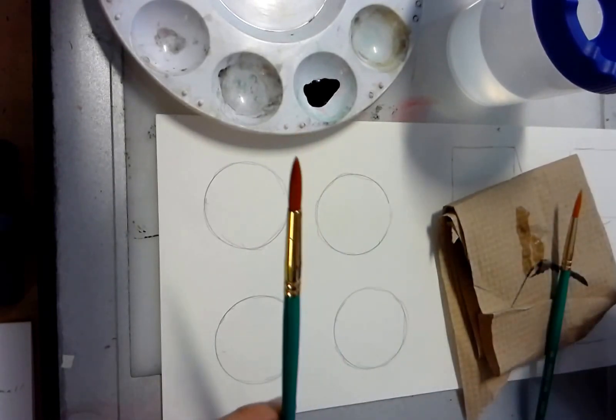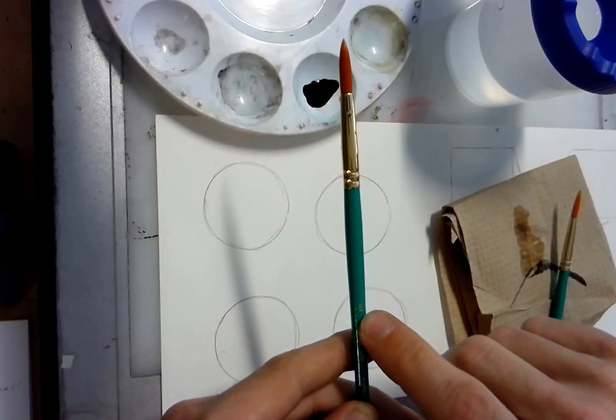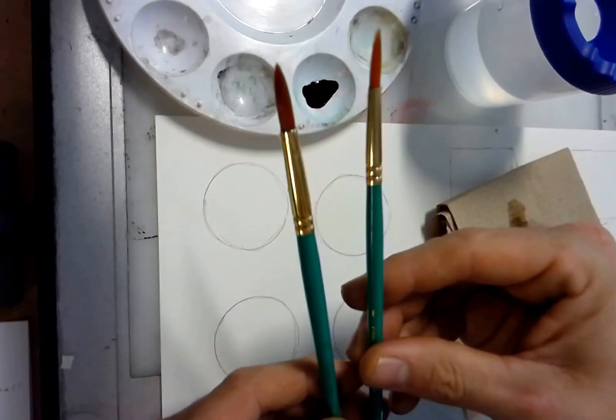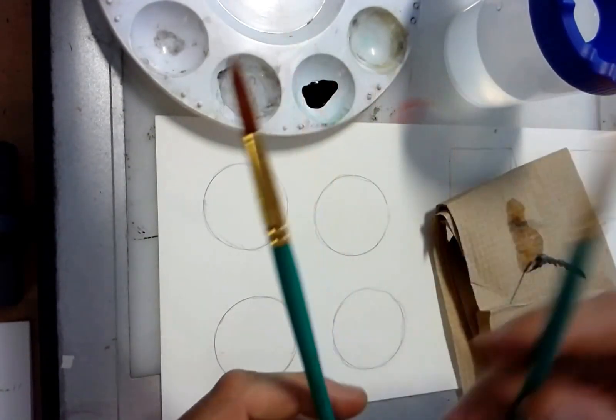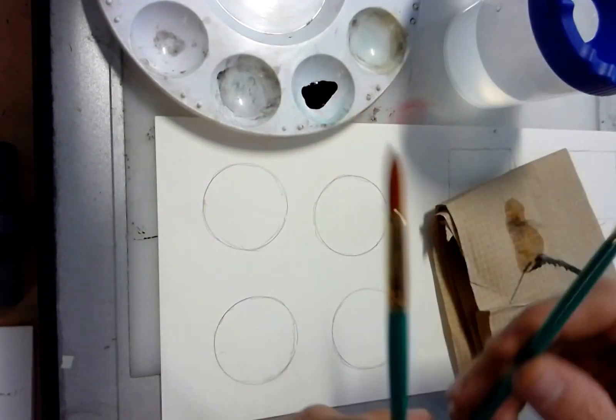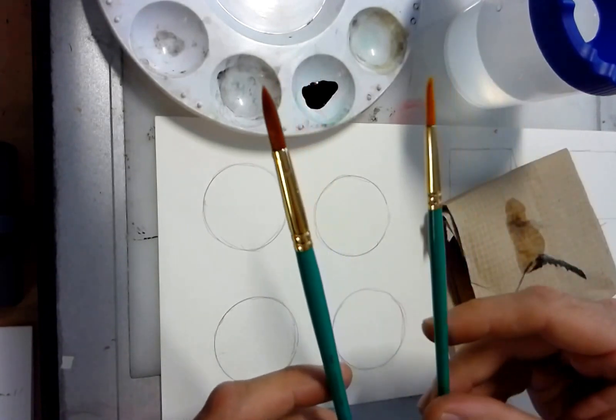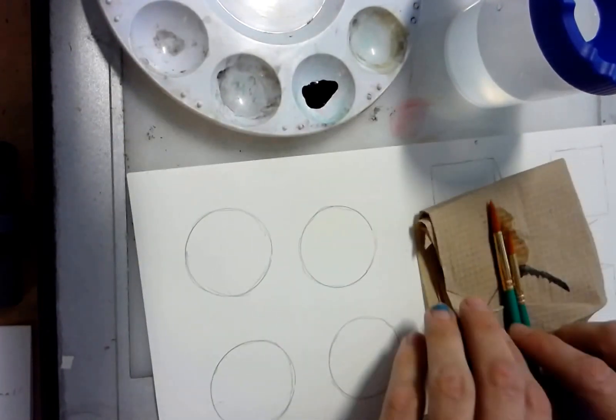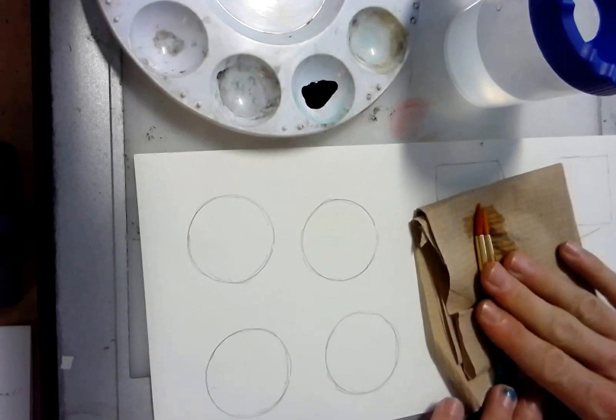So the first thing you are going to do is you're going to take the bigger brush. This one happens to be an eight—if you notice on the handle, there's numbers on paint brushes. This is an eight and this is a six. Truly, you just want two big ones or a big one and a small one. So I have two paint brushes here—I have an eight and a six. You just need two different sizes to make this work.